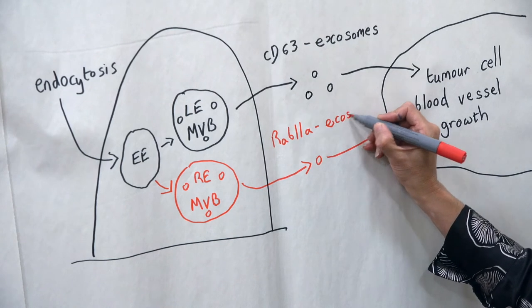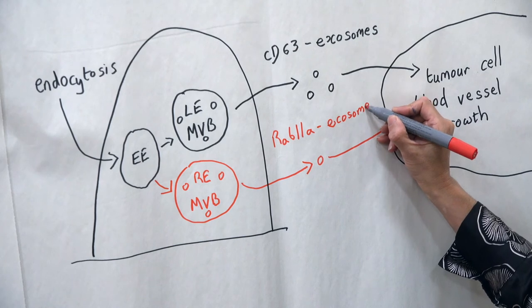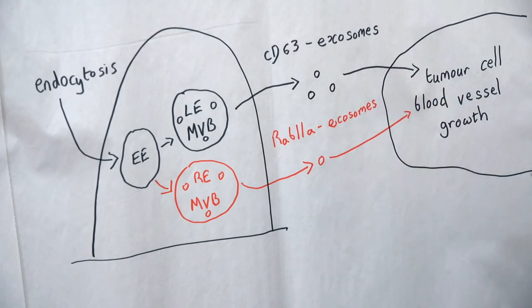We showed that some RAB11a compartments contain vesicles that were secreted, and some of these were marked by RAB11a.